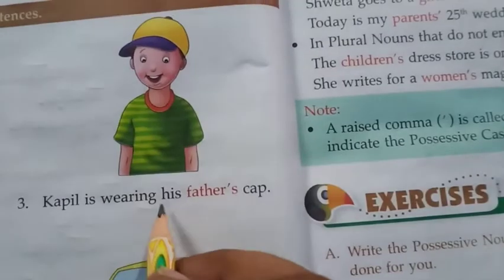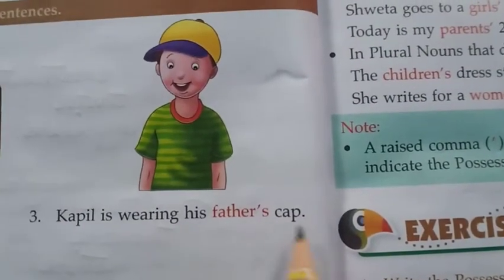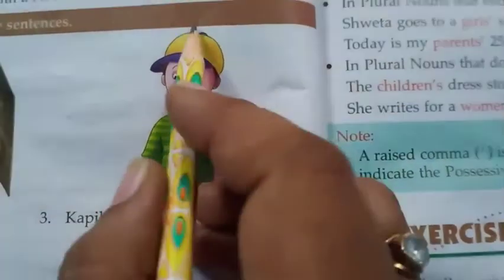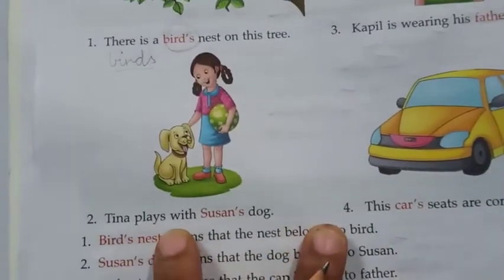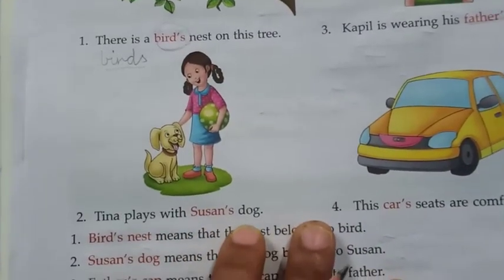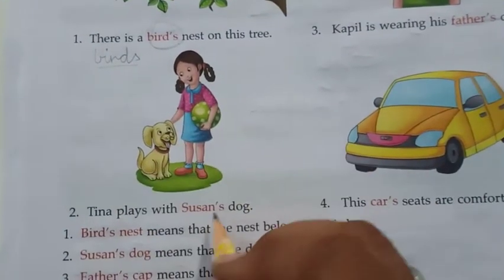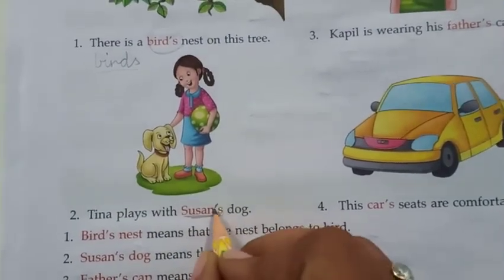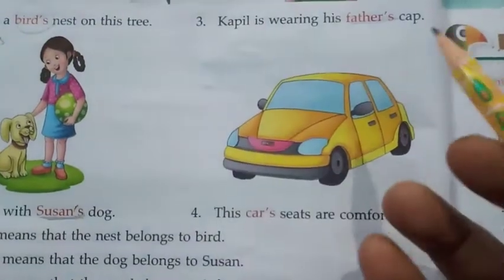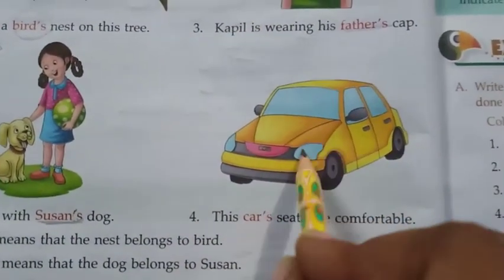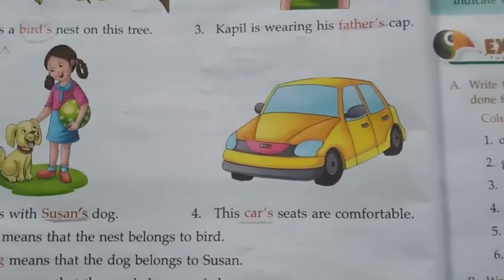Apostrophe s. Couple is wearing his father's cap. Couple kisi ki cap pehna hai? Father ki specially. Toh hum kahenge father's cap — apostrophe s. Tina plays with Susan's dog. Tina is playing, but whose dog? Susan's — apostrophe s. This car's seats are comfortable. There are many cars, but I'm specially pointing out this car's — so apostrophe s.